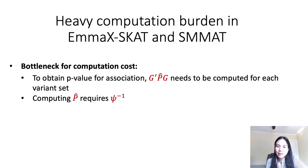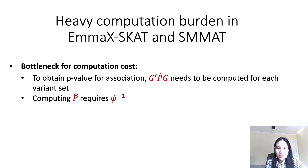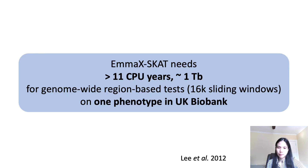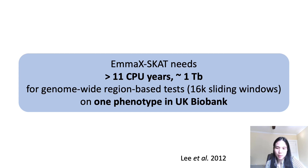Both MXSCAT and SMAT have heavy computation burden. The bottleneck for computation cost is computing the p-hat matrix, which requires the inversion of the GRM for each gene or variant set. The computation time for this step increases cubically as sample size increases, and storing the n-by-n GRM costs much memory when the sample size is large. It would take MXSCAT 11 CPU years and about 1 TB of memory to conduct genome-wide region-based tests for one phenotype in the UK Biobank.